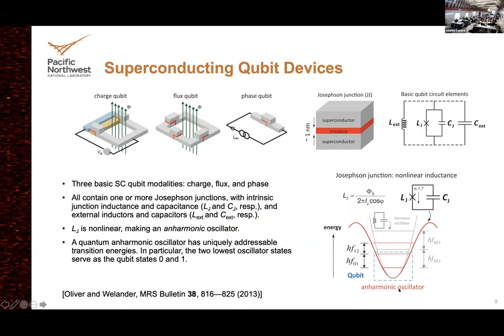Superconducting qubits come in a few different flavors depending on the device architecture and readout method. What they all have in common is at least one Josephson junction — with its inherent inductance and capacitance — plus whatever inductors and capacitors you add in the circuit. That creates a resonant structure, and importantly, it's an anharmonic oscillator because the intrinsic junction inductance is nonlinear. In an anharmonic oscillator the transition frequencies are unique, so you can independently address them like in an atom — and use the ground state and first excited state as zero and one of your qubit.